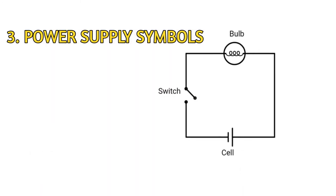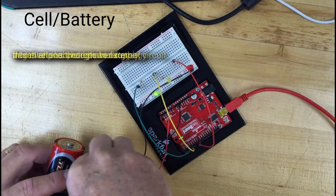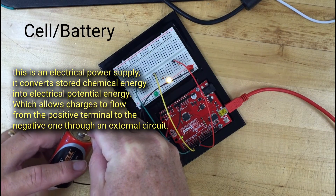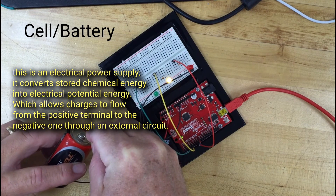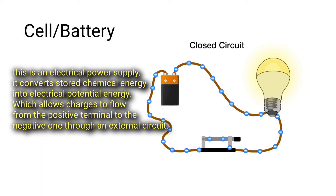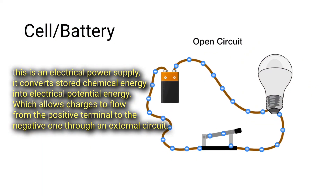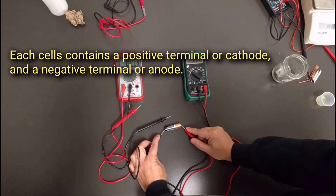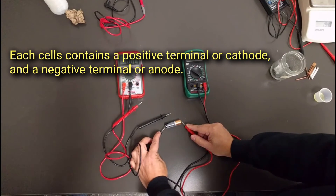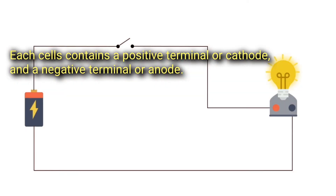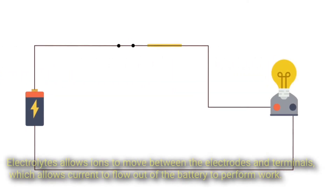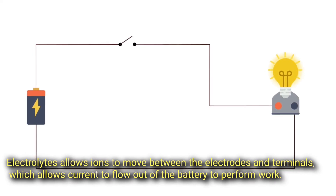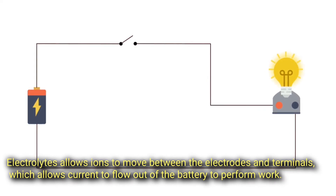Power supply symbols. Cell circuit: this is an electrical power supply that converts stored chemical energy into electrical potential energy, which allows charges to flow from the positive terminal to the negative one through an external circuit. Each cell contains a positive terminal or cathode, and a negative terminal or anode. Electrolytes allow ions to move between the electrodes and terminals, which allows current to flow out of the battery to perform work.